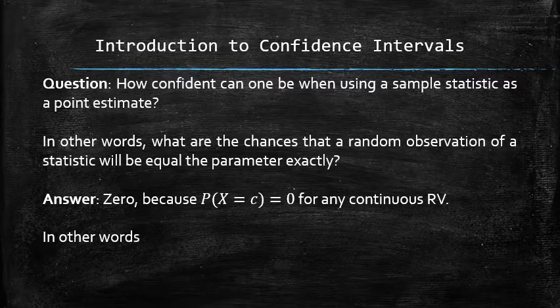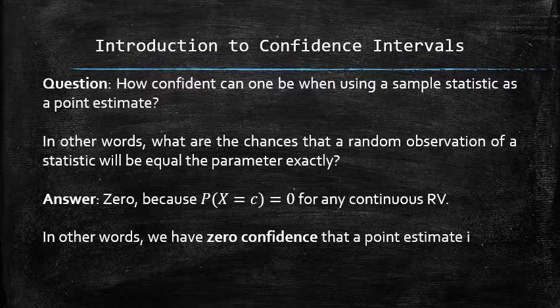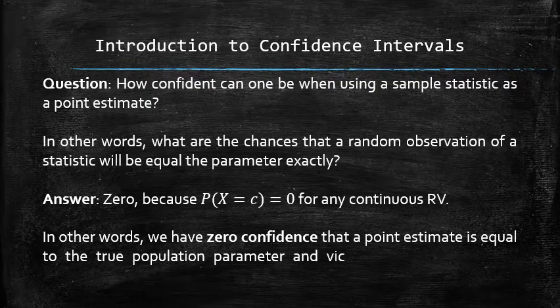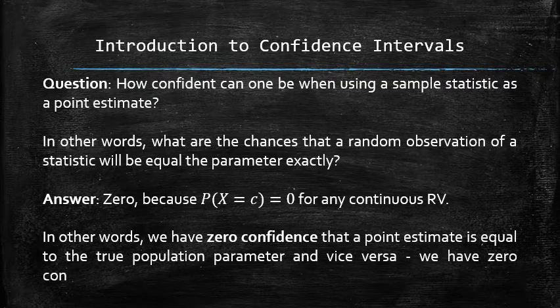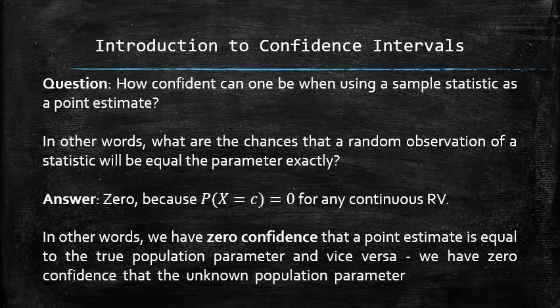In other words, we have zero confidence that a point estimate is equal to the unknown population parameter. And vice versa, we have zero confidence that the unknown population parameter is equal to one random observation of the sample statistic.